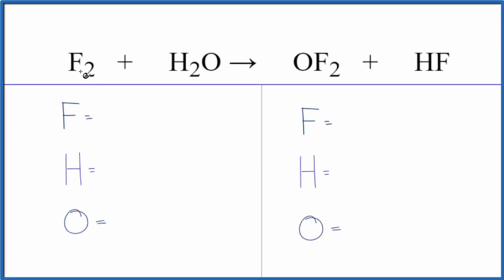In this video we'll balance the equation F2 plus H2O. To do that, the first thing we're going to do is count the atoms on each side of the equation. We have two fluorine atoms, two hydrogen, and one oxygen.